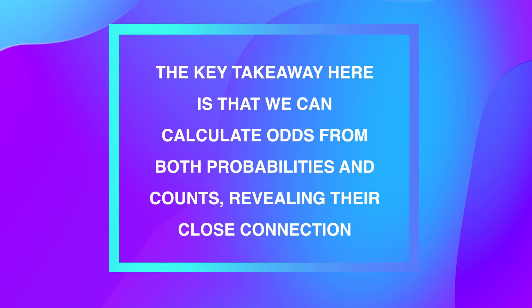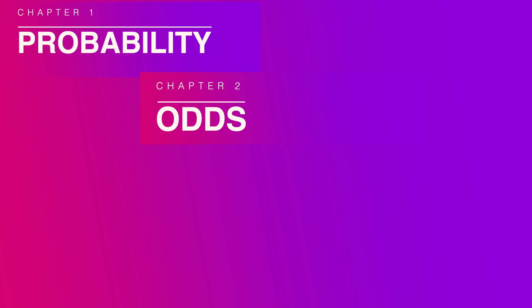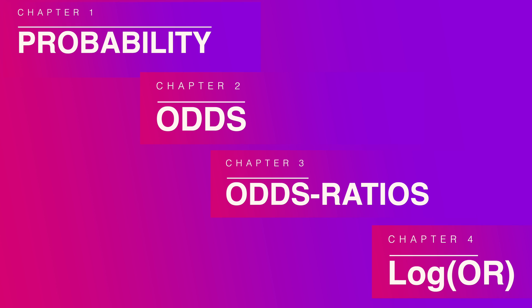The key takeaway here is that we can calculate odds from both probabilities and counts, revealing their close connection. Now that we understand both probabilities and odds, let's delve into why we need odds ratios and why logistic regression delivers the logarithm of odds ratios.